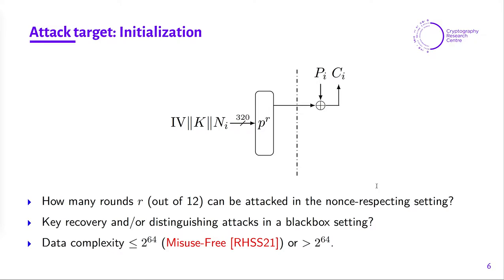Our target is shown here. We have the constant IV, the secret key k, and the nonce n. We set the associated data and message length to zero and simply work on the initialization phase. We apply the round function for R rounds and then take the ciphertext for one block of the plaintext. The question here is: how many rounds can we attack out of the 12 rounds?